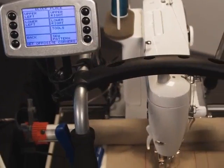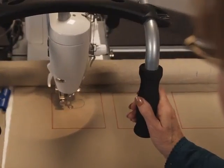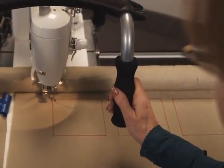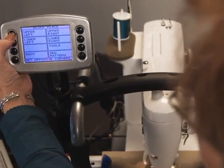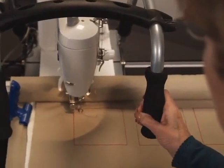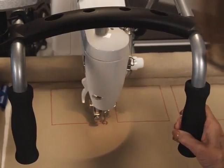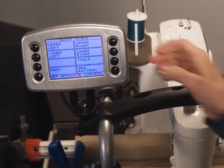You are now prompted to define your block. In this case you'll move the carriage to the top left corner of your desired block location. Push the upper left button. Now move to the opposite lower right corner of your block and select the button labeled lower right.